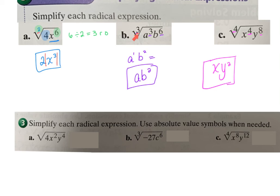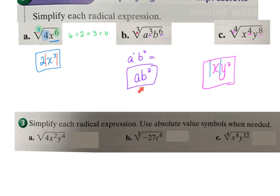For a cube root result of just 'a' — the index is odd, so no absolute value is needed. For the fourth root example where you get x and y³: this has an even index. The x that came out is odd — needs absolute value. The y³ is odd too — needs absolute value. Rule: if the index is even and the exponent that comes out is odd, use absolute value. If the index is odd, never worry about absolute value.